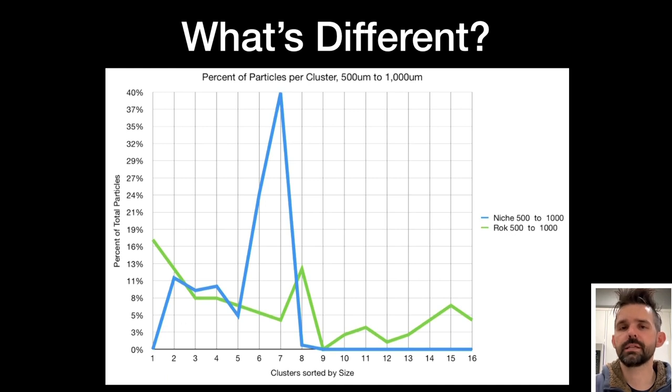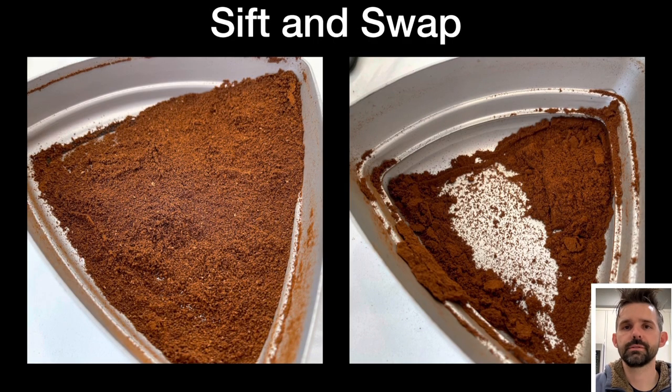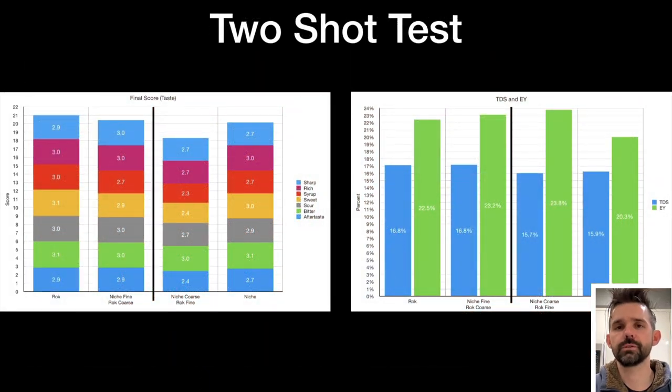So I did a sift and swap. I sifted both coffees and then I swapped the fine particles from the rock with the fine particles of the niche and I pulled some shots. So in the shots, I found that from both taste and extraction yield, doing this switch really brought the taste in line with expectation. The niche was able to perform like the rock when using the coarse grounds from the rock, which indicate to me that the rock is doing something different. Maybe from the breaker burrs at the top, I'm not sure. But it was interesting because this method is good for comparing grinders, at least in trying to understand where their difference is.